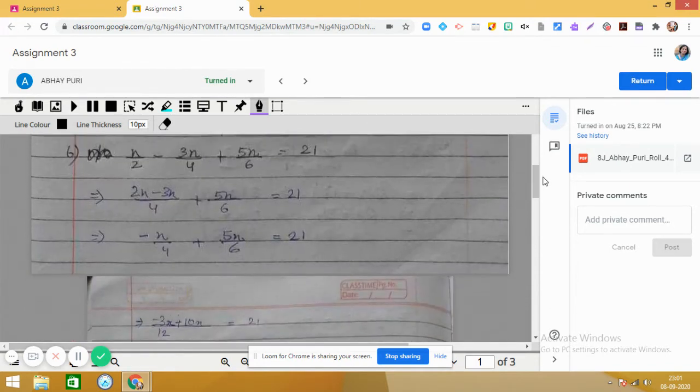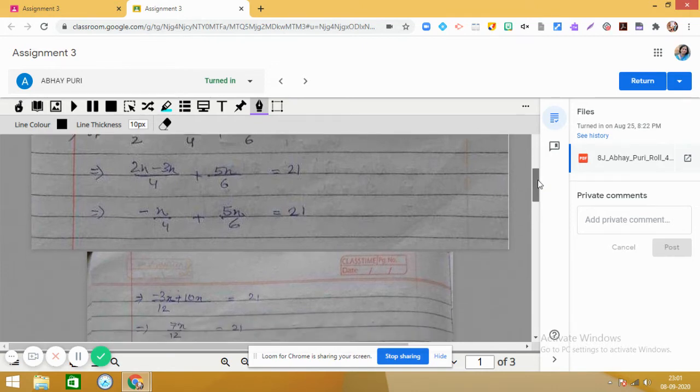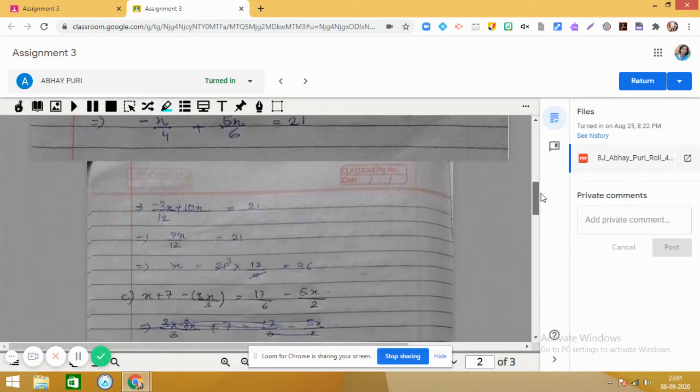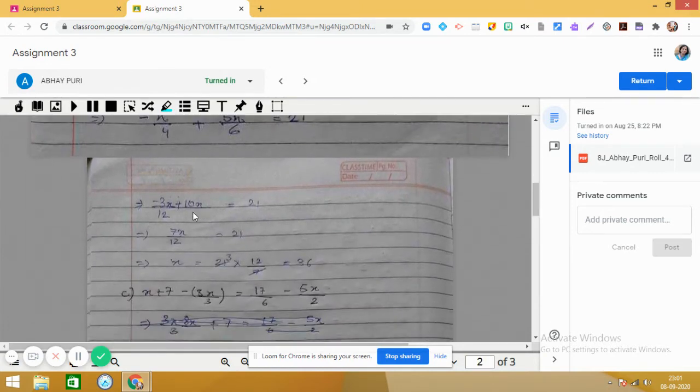Now coming to the second part: n/2 - 3n/4 + 5n/6 = 21. Very simple, you have all the terms containing n on the left hand side. You can take LCM and simplify, and on the right side we have 21. When we simplify we get -3n + 10n by 12 = 21.